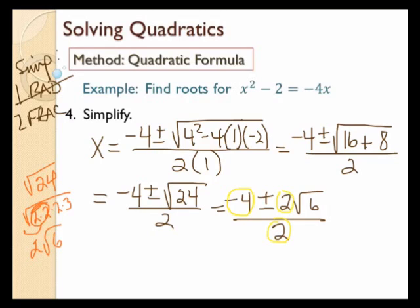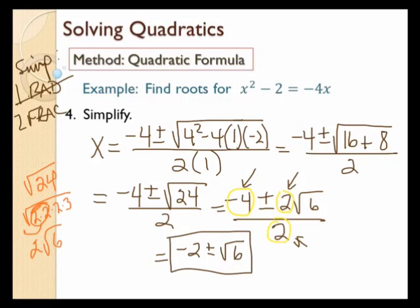I can take a 2 out of all of them. Negative 4 divided by 2 is negative 2. Plus or minus — 2 divided by 2 is 1, but since it's the coefficient of the square root of 6, I don't need to write it, so I just have square root of 6. And it's all over 2 divided by 2, which is 1 — I don't need to write the 1 on the bottom. So my final answer is negative 2 plus or minus square root of 6.